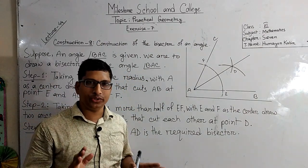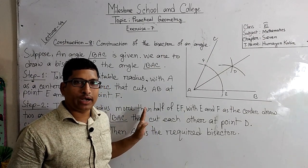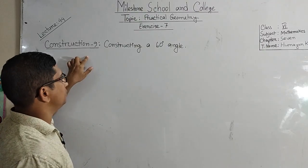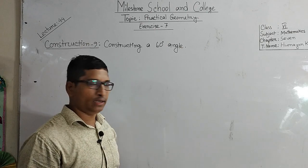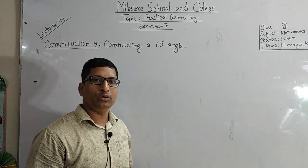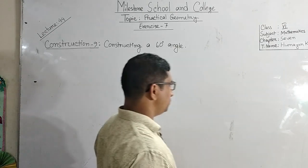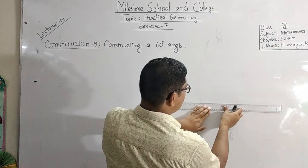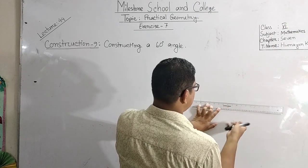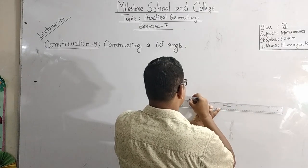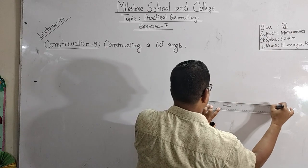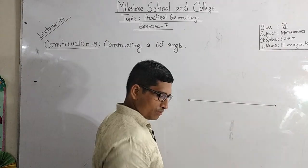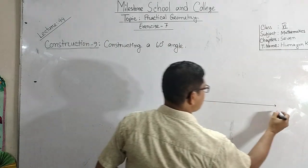Students, I think it is very clear to you. Now everyone write in your classwork copy. Our next number is Construction 9: Constructing a 60 degree angle. Here we will draw a 60 degree angle without using a protractor. Now look at here - how we will draw this angle. At first, we will draw a line. Suppose line PQ.